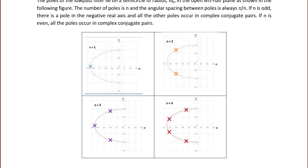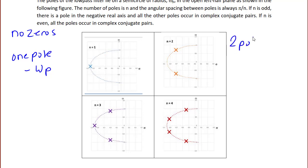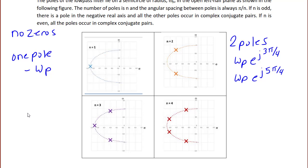Looking at the pole-zero plots: for n=1, there are no zeros and one pole at −ωp. For n=2, there are two poles at ωp·e^(j3π/4) and ωp·e^(j5π/4), which are complex conjugates. For n=3, there are three poles: one at −ωp on the negative real axis, and a complex conjugate pair at ωp·e^(j2π/3) and ωp·e^(j4π/3). For n=4, there is no pole on the negative real axis; all four poles are in two complex conjugate pairs, with one pair at ωp·e^(j7π/8) and ωp·e^(j9π/8).